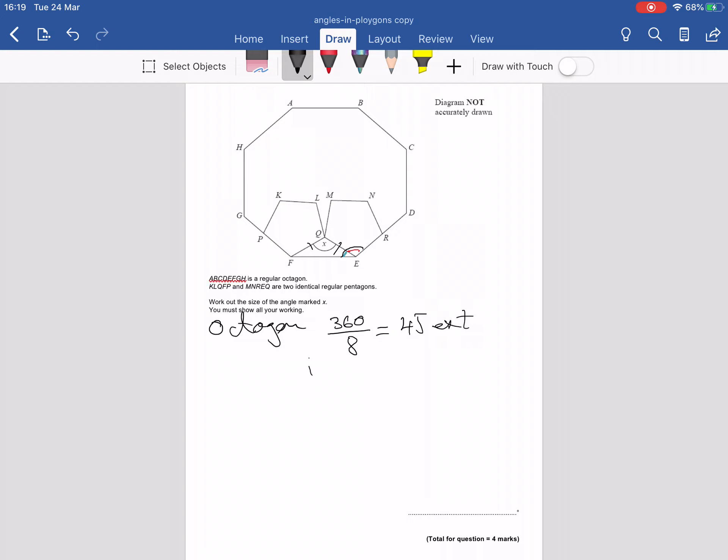So interior angle is equal to 180 minus 45. Okay, so that's 135 degrees is one interior angle of the octagon.